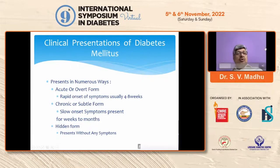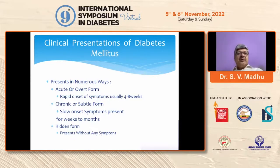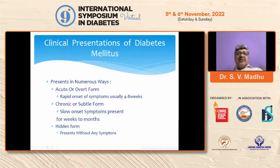Presentations may be acute or overt, in which the patient rapidly has onset of symptoms usually in less than four to eight weeks before presenting to the physician — and type 1 disease usually presents in this form with classical symptoms. A slower onset presentation is much more common in type 2 diabetes, known as the chronic or subtle form. And lastly there may be a hidden form where the patient may have silently ongoing hyperglycemia without any symptoms, and such patients are detected only by screening laboratory tests.